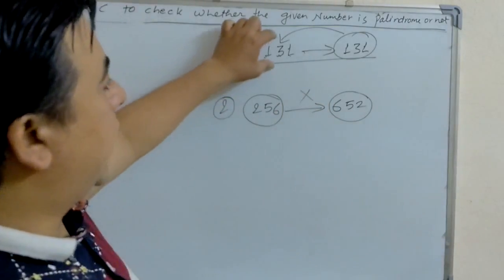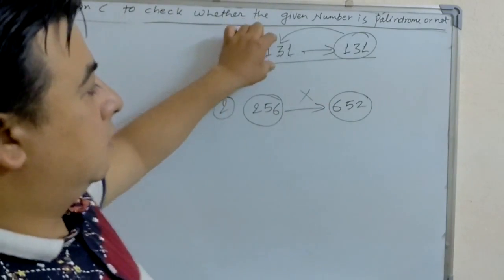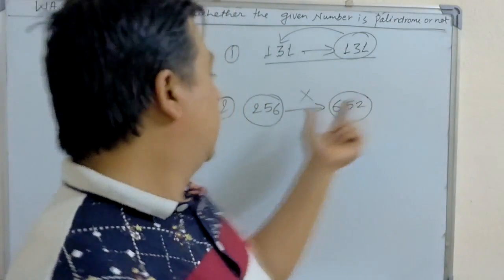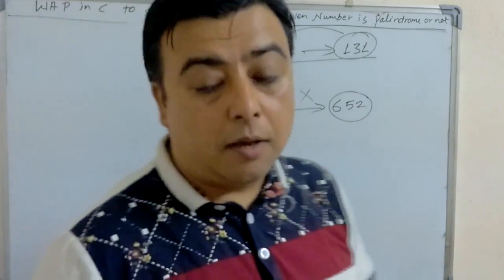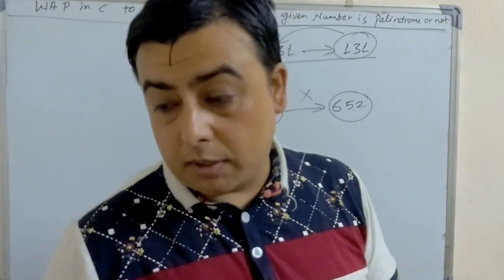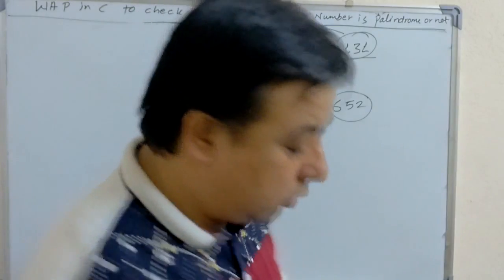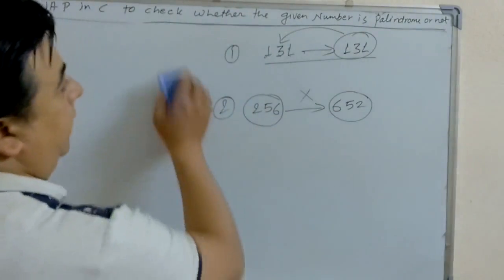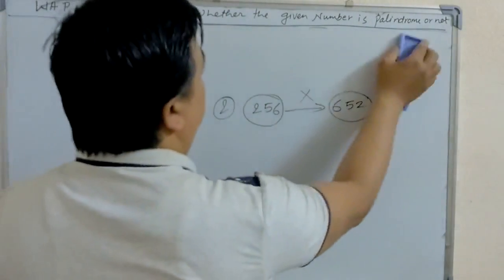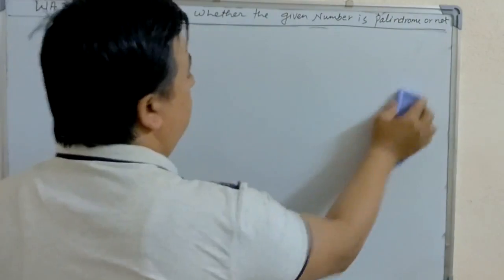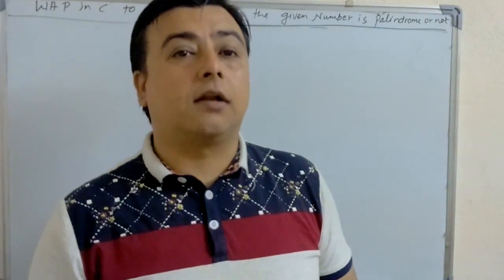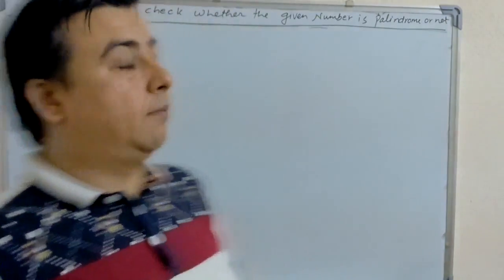So, 131 is the palindrome number and 256 is not the palindrome number. I think you understand what palindrome numbers are. Let's start the program.